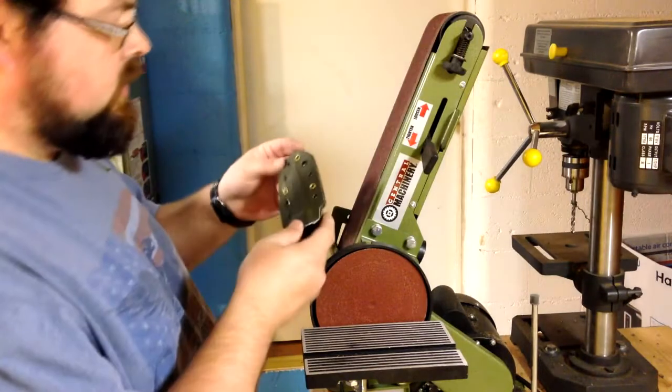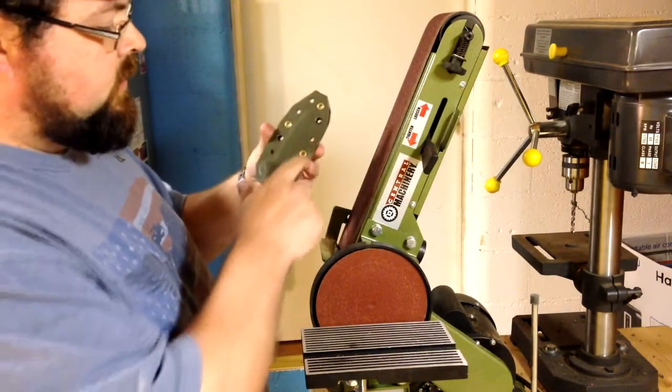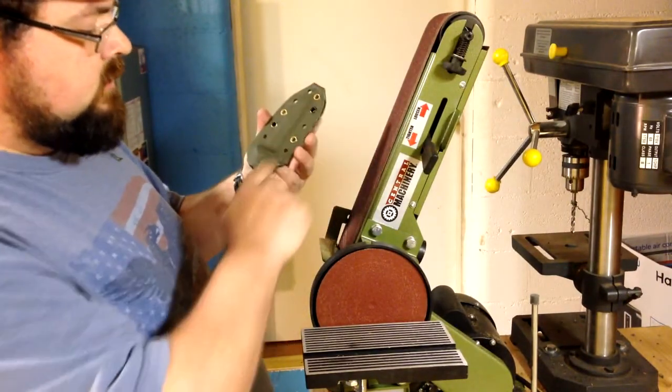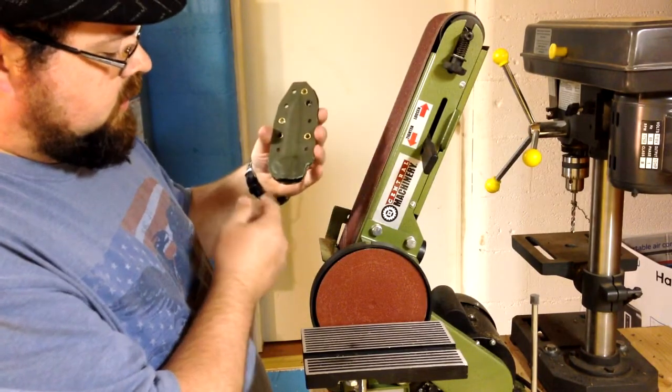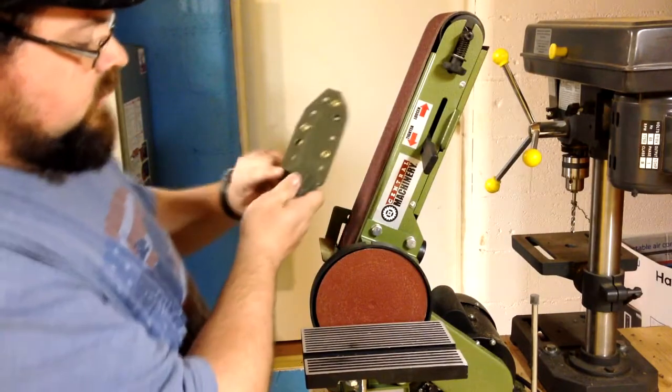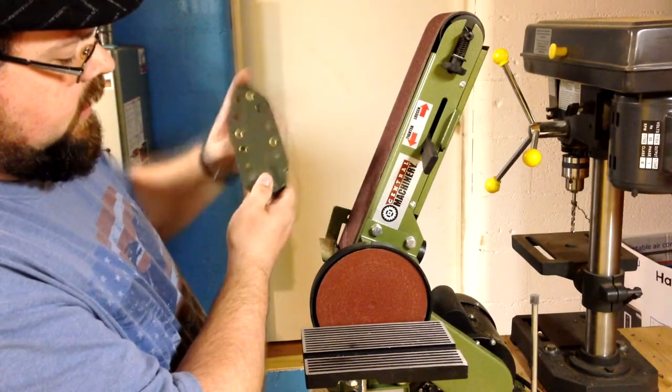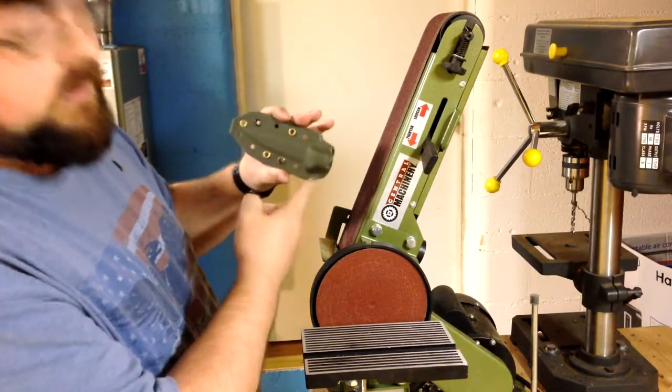Alright, so now we're over here at the sander. We're going to round these edges out and get them closer in, take as much of this material off as we want. We're just going to do the outside layer here and we'll do the finer stuff with the Dremel.